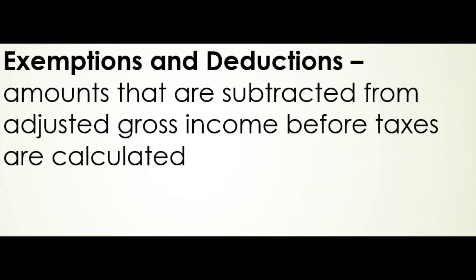Then we have exemptions and deductions. Exemptions and deductions are amounts that are subtracted from the adjusted gross income before taxes are calculated. Deductions might include interest that you're paying on a home loan or money that you have donated to charity. Once you subtract those from your gross income, you've got your taxable income — that's the income you're going to use to calculate your taxes.